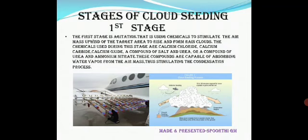Stages of cloud seeding. First stage is agitation. Agitation uses chemicals to stimulate the air mass to reach our target area and form rain clouds. The chemicals used in this first stage are calcium chloride, calcium carbide, calcium oxide, a compound of salt and urea, or a compound of urea and ammonium nitrate. These compounds are capable of absorbing water vapor from the air mass, which stimulates the condensation process.